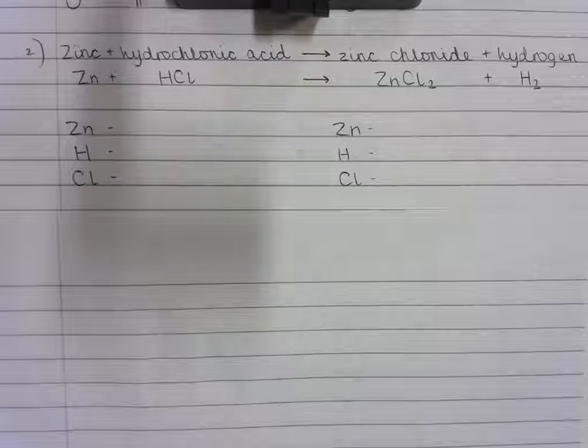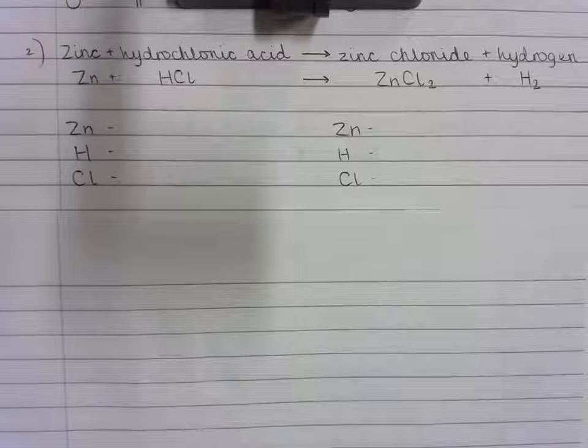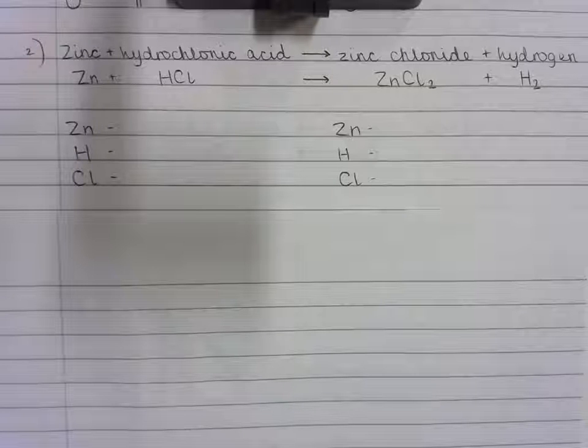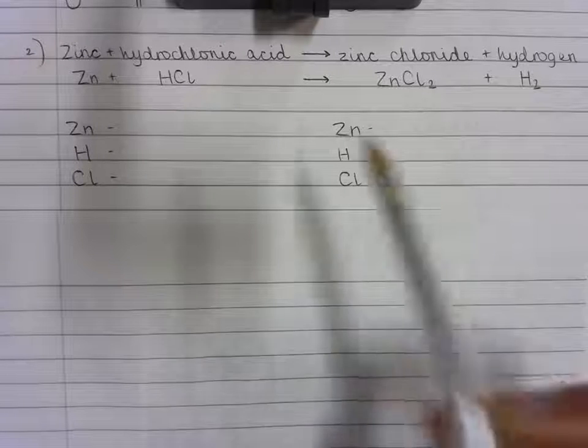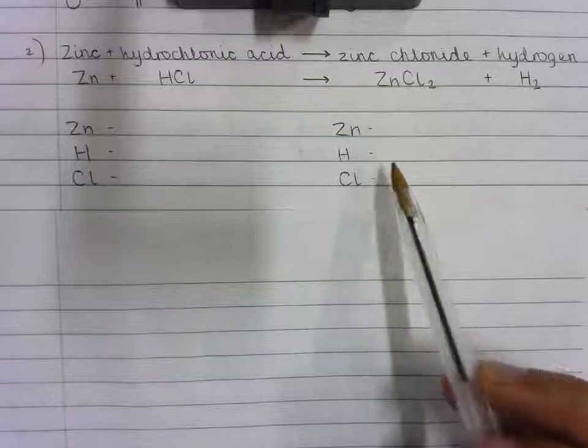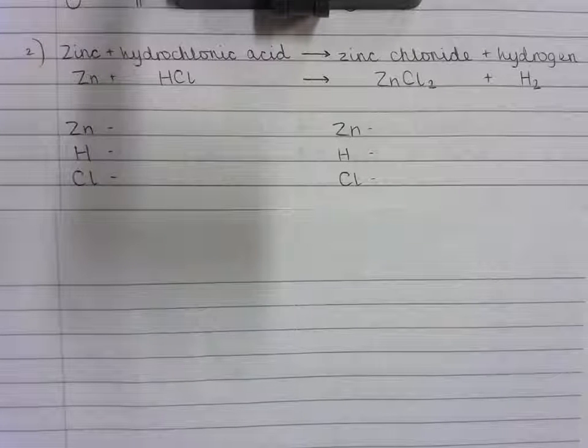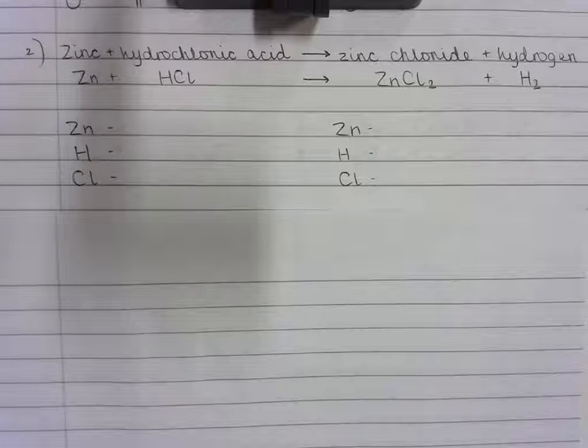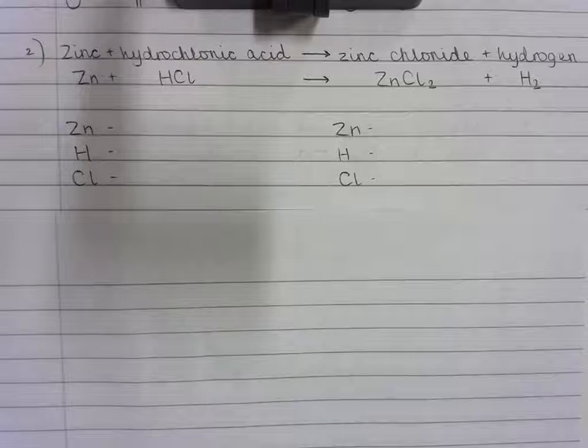I have written the word equation, the chemical equation, and written out the chemical symbols for the atoms that react in the reaction on the reactant and product side. Now I need to count the number of atoms of each element that react on the reactant and product side in pen.